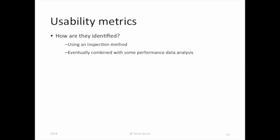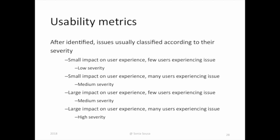Another way to assess the quality of our product or high fidelity prototype is using heuristics evaluation or what we call an inspection method. We inspect our product based on a set of heuristics that are usually provided by experts, like Jakob Nielsen's heuristics evaluation. These heuristics help us understand if our product meets the requirements needed to be in the market. After testing our product and doing data analysis, the way we report our findings is in terms of how high the impact of these errors or issues is on the user experience. Usually we classify them as low or high severity.